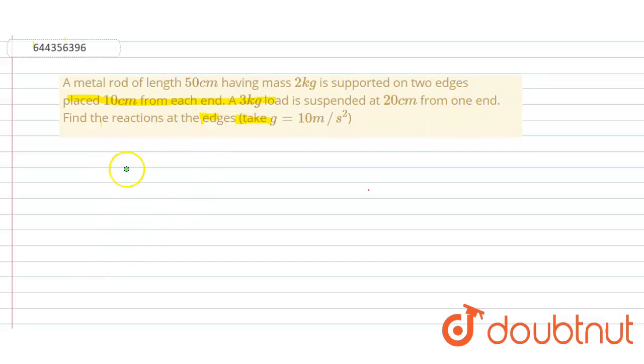So what we have, we'll draw a rod. This is the rod, right? And we'll take three points A, C, and B.